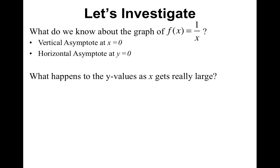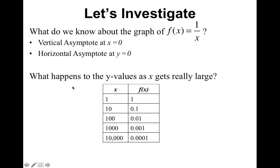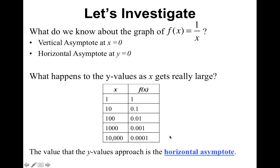What happens to the y values as x gets really, really large? As the denominator gets really, really big, what happens to your output? Pause and jot down what you think will happen to this function as the denominator gets very, very large. You should have said that the output is going to get really, really small — actually, getting very close to zero. And the value that the y value approaches is what we call the horizontal asymptote.